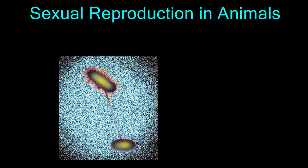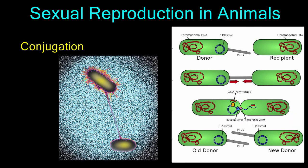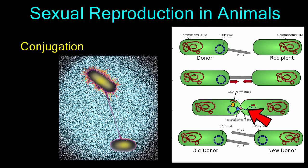A primitive form of sexual reproduction can even occur amongst unicellular organisms. This primitive form is called conjugation. During conjugation, the two cells connect using a thin tube called a pillus. Once the cells are connected, the donor cell transfers a small bit of genetic material to the recipient cell.